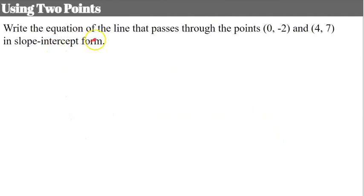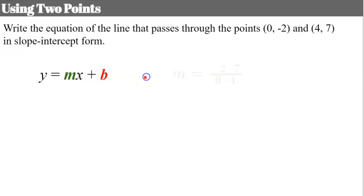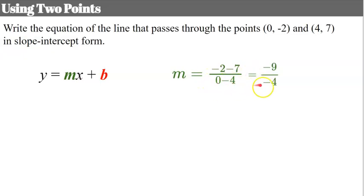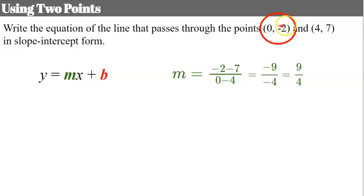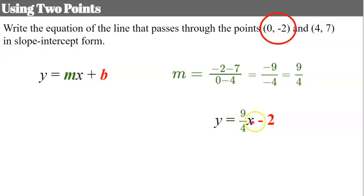We could also write the equation of a line that passes through two points in slope-intercept form. We start with slope-intercept form and identify our slope and y-intercept. To find the slope: change in y is negative 2 subtract 7, all divided by change in x, 0 subtract 4. That gives negative 9 over negative 4, a slope of positive 9 fourths. Since one point has an x-coordinate of 0, that tells me the y-intercept is negative 2. So the equation is y equals 9 fourths x subtract 2.